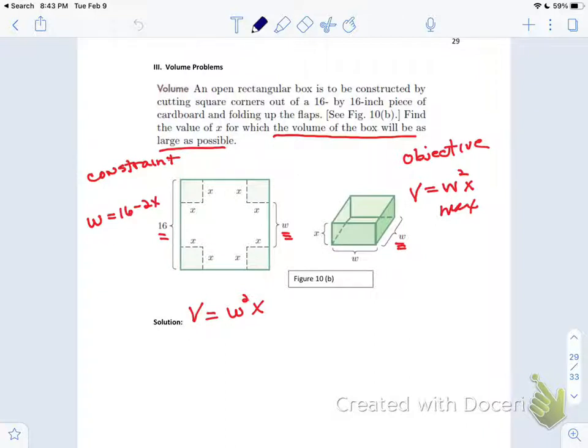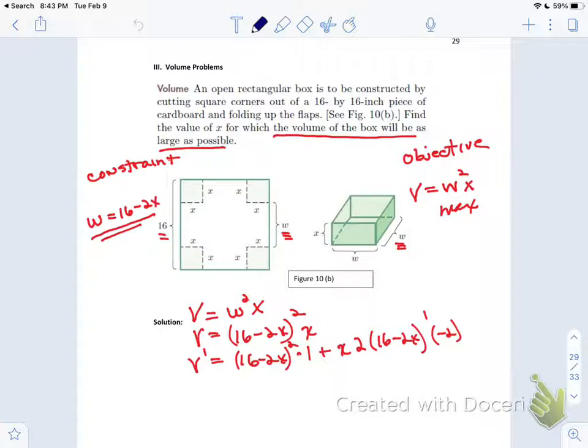So volume equals (16 minus 2x), and I'm going to square that, because that's what I did to the w, times the x. So I'm going to use my product rule and my chain rule with the power rule. So v prime equals left d right, which is 1, plus right d left, which is bring the 2 down, (16 minus 2x) to the first, and then do the chain rule, times a negative 2.